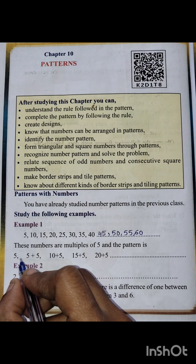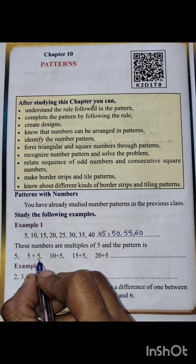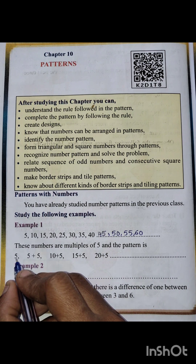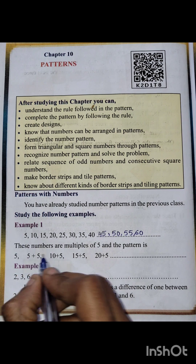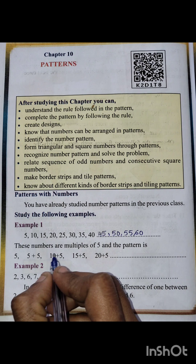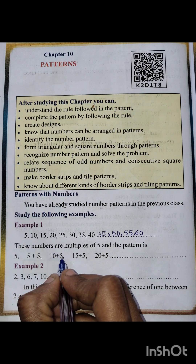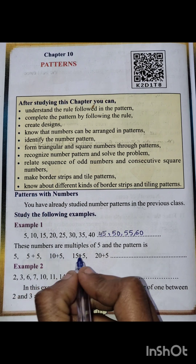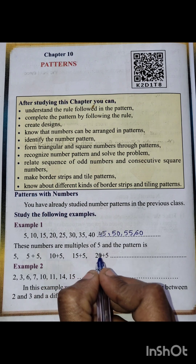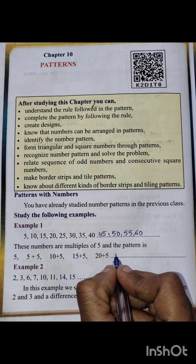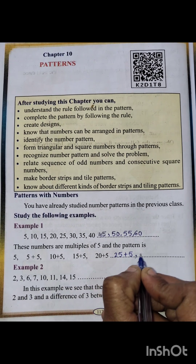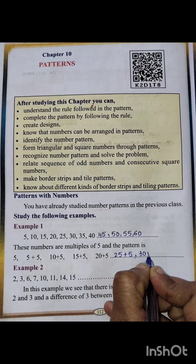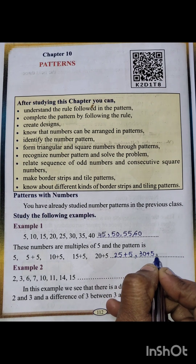This is the pattern: starting from 5, each time you add 5. The first number is 5, plus 5 gives 10, plus 5 gives 15, then 20, 25, 30 — each next number is obtained by adding 5 to the previous one.